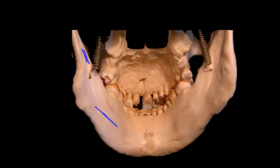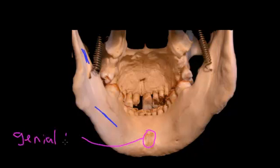The first and most obvious feature is this little cluster of lumps in the midline, and they are called the genial tubercles. There are supposed to be four — two on the left and two on the right — though it's pretty rare that you actually see all four. Those four muscle attachments have muscles that run up into the tongue.